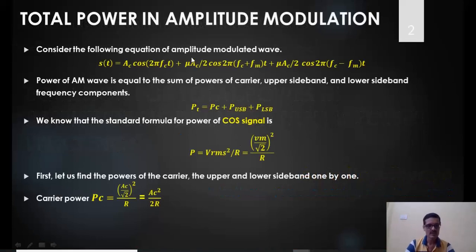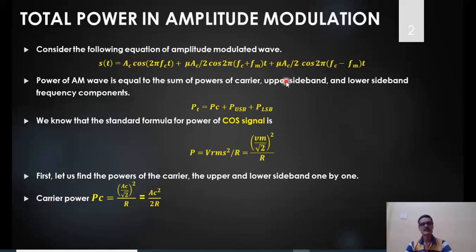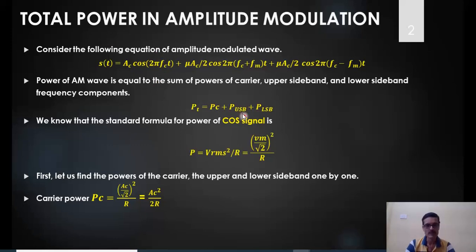In amplitude modulation, the time domain equation consists of one unmodulated carrier, an upper sideband with amplitude equal to μAC/2, and a lower sideband with amplitude equal to μAC/2. These are all peak amplitudes. The total power required to transmit the AM signal is the sum of power required to transmit the unmodulated carrier (PC), the upper sideband (PUSB), and the lower sideband (PLSB).